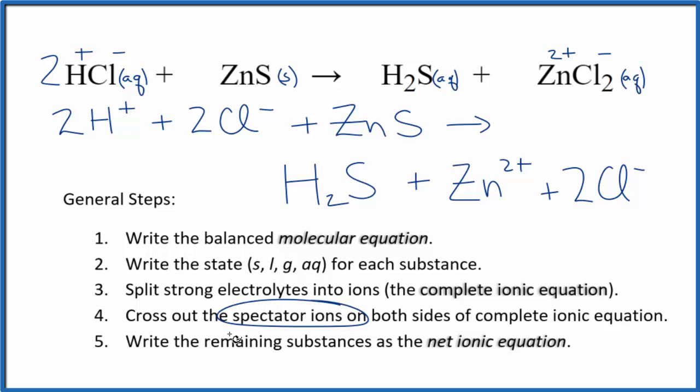Now we can cross out spectator ions. They're on both sides of the complete ionic equation. So I'm looking here. The only thing I see that's the same in the reactants and the products, that's these 2 chloride ions. I'm going to cross those out, because those are spectator ions.